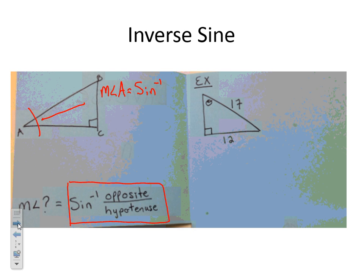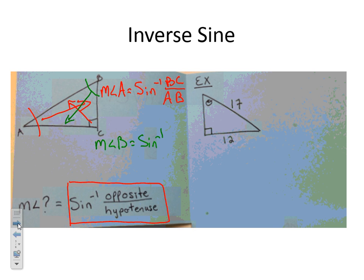It's going to be the opposite, which is BC, over the hypotenuse across from my right angle, which is AB. Now I can do the same thing if I want to find the measure of angle B — the inverse sine of the opposite, which is AC, over the hypotenuse AB.